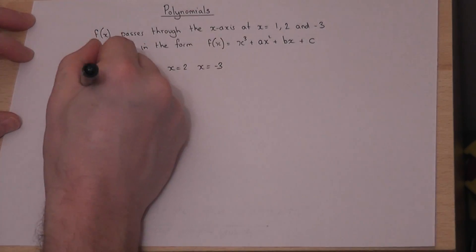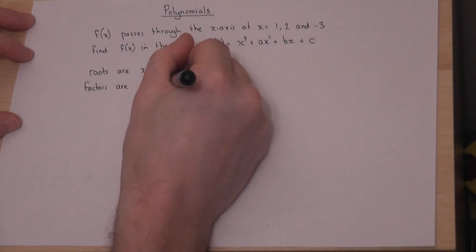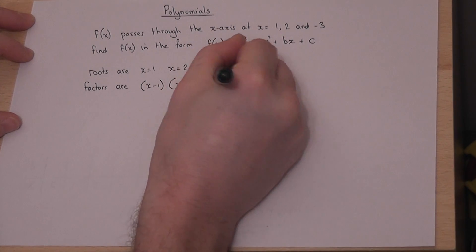is that the factors are (x - 1), (x - 2), and (x + 3).